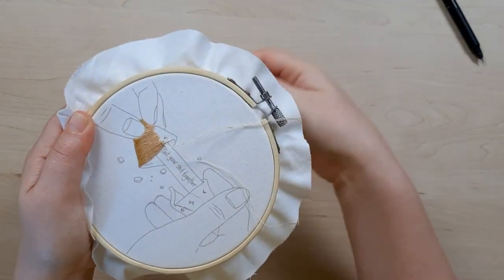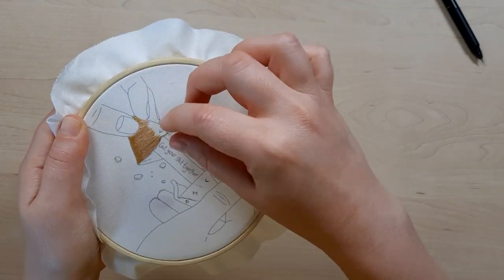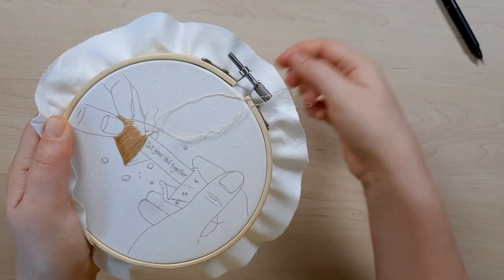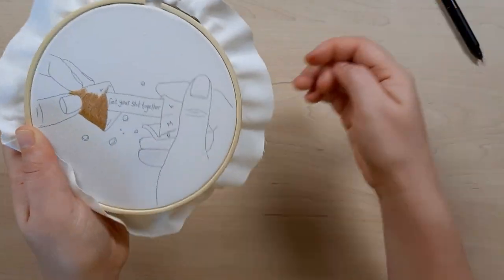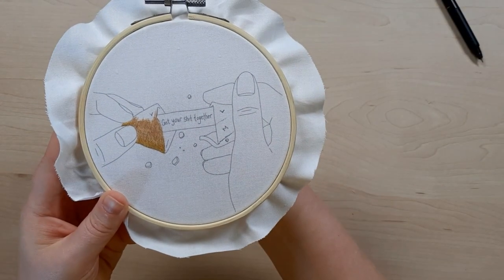We're going to be pulling our thread through, keeping that edge staggered on both sides, because again this is a relatively large section, so we're not going to be able to do it with just one row. We're going to need to fill in more than that.